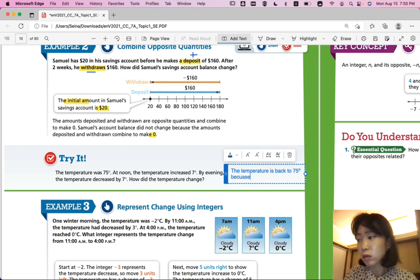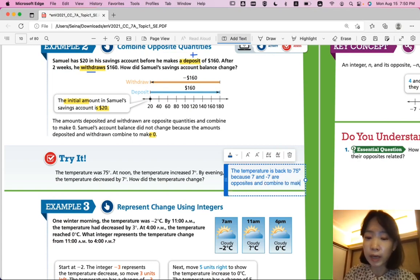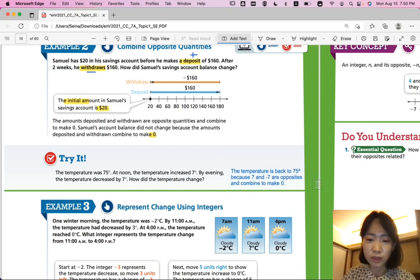Because 7 and negative 7 are opposites, and 7 and negative 7 are opposites and combine to make 0.